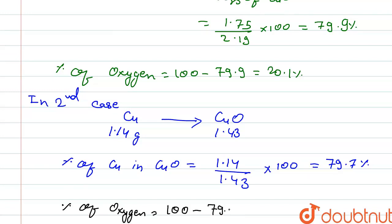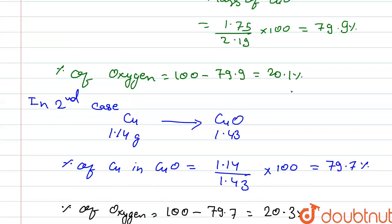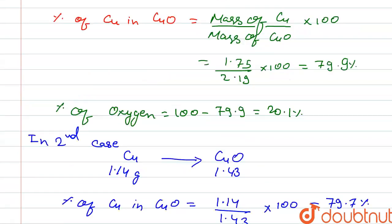The percentage of oxygen in the second case is 100 minus 79.7, which is approximately 20.3 percent. So, the copper oxide prepared by either method contains copper and oxygen in the same proportion — approximately 20.1% or 20.3% oxygen, and approximately 79.9% or 79.7% copper — the same proportion by mass. Hence, this proves the Law of Constant Proportion.